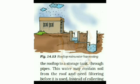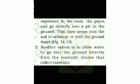The first technique is rooftop rainwater harvesting. In this system, rainwater is collected from the rooftop into a storage tank through pipes. This water may contain soil from the roof and may need filtering before use. Instead of collecting rainwater in a tank, the pipes can go directly into a pit in the ground, where it seeps into the soil to recharge or refill the groundwater. Another option is to allow water to go into the ground directly from the roadside drains that collect rainwater.